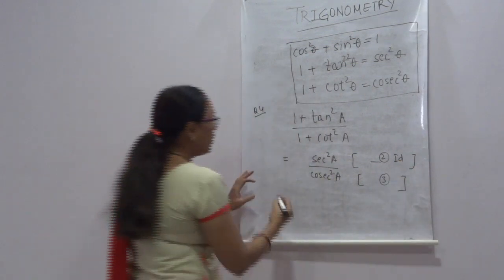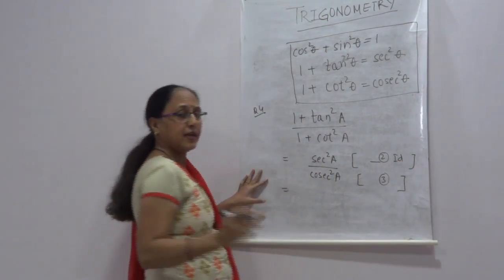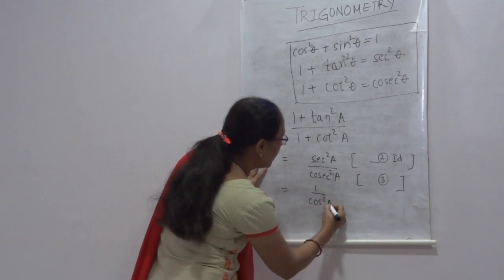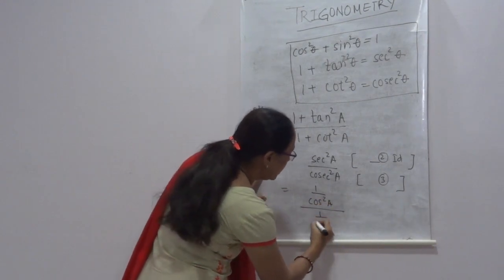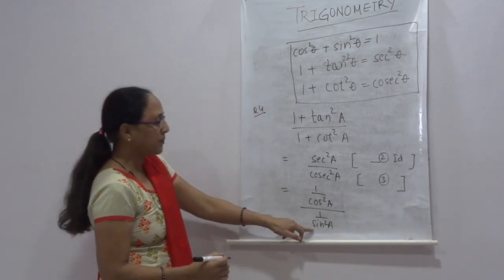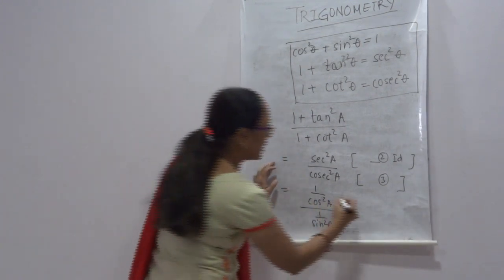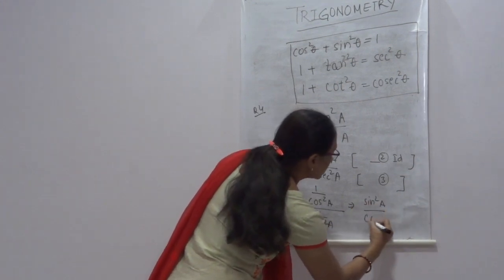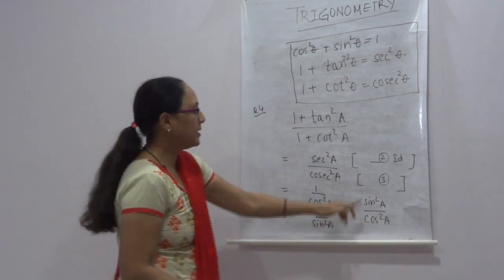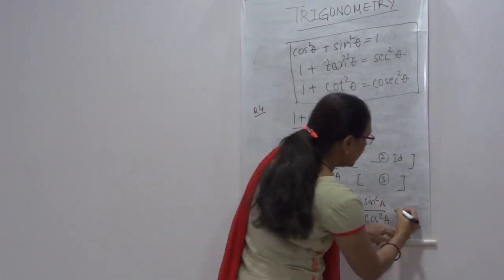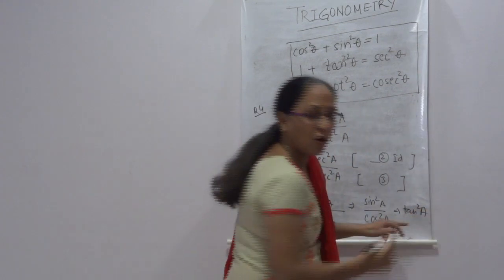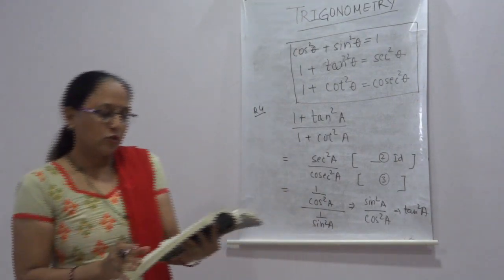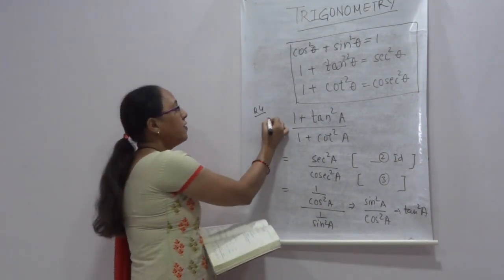Now what is sec²A? It is 1/cos²A, and cosec²A is 1/sin²A. After cancellation we get sin²A / cos²A. And what is sin²A / cos²A? That is tan²A. So the answer is option number 4. This question carries 1 mark.